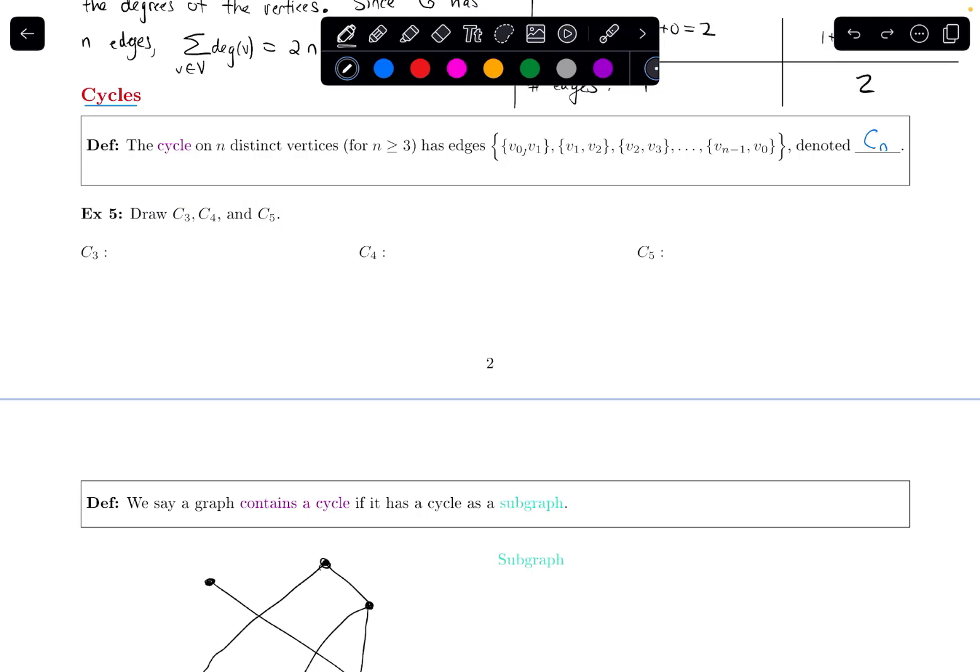For C3, we have three vertices. Let me call the first one V0, then the next one V1, and the next one V2.